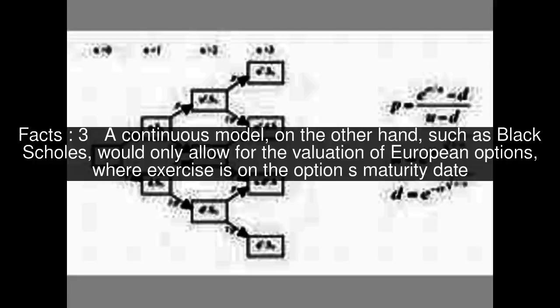A continuous model, on the other hand, such as Black-Scholes, would only allow for the valuation of European options, where exercise is on the option's maturity date.